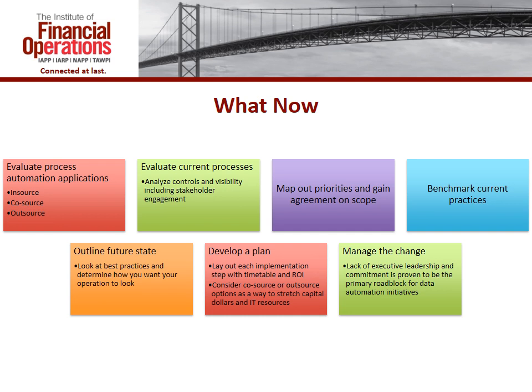Evaluating current processes allows you to determine where you want to be and how to get there. That's when you can start evaluating process automation applications: do we need to insource, co-source — meaning license AP workflow software but have a third party do invoice receipt, open prep scan, and data capture — or outsource the whole process? Part of developing your roadmap is mapping out your priorities and getting agreement with all stakeholders within your organization on the scope of what you're trying to accomplish. When we walk into an organization, AP automation is popular with shared services directors, AP managers, and finance people — but when you go talk to IT, they're really not into AP automation. They've got other things on their mind, and if you don't get their buy-in early on, you're going to have a hard time selling this down the line.